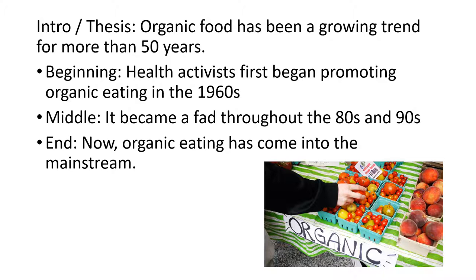One of the convenient things about stories from a structural point of view is that they are neatly divided up into three parts: beginning, middle, and end — or, if you prefer, past, present, and future. If you can divide the timeline of your trend into these three stages, and write two pages about each stage, then you have a rough outline for your seven-page essay.